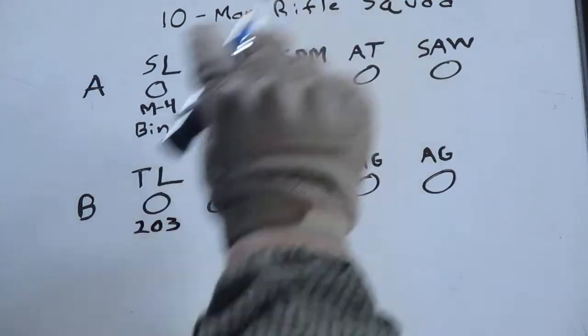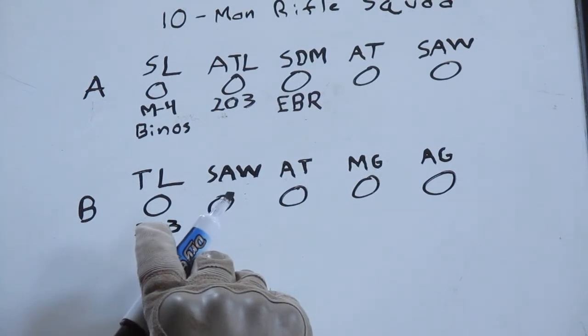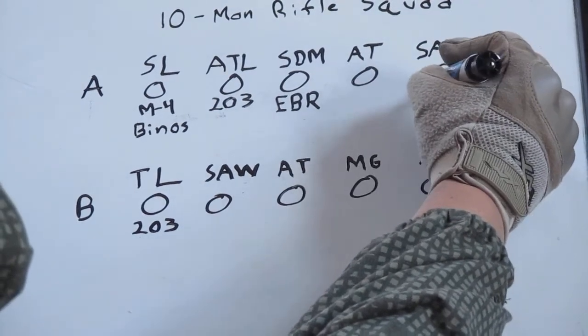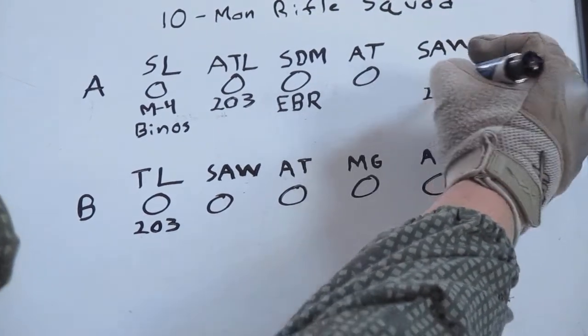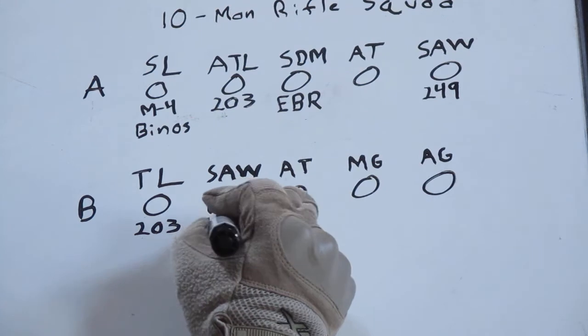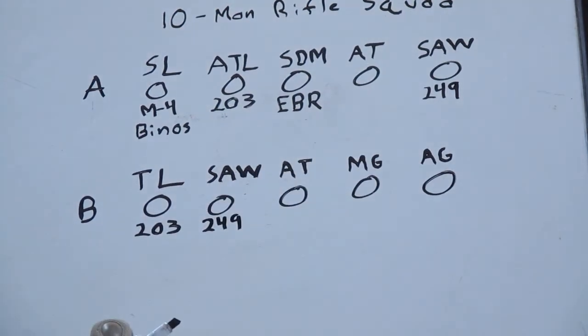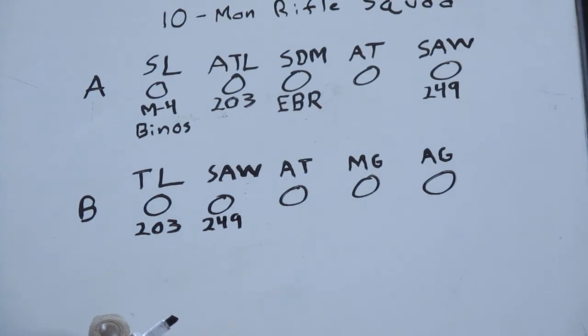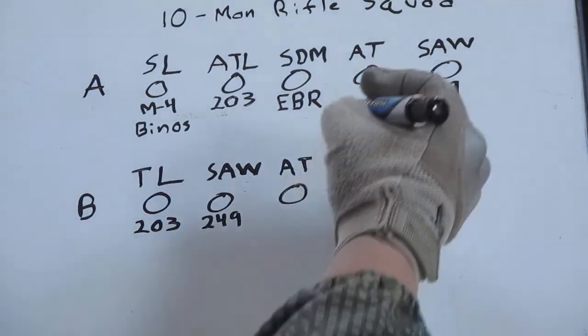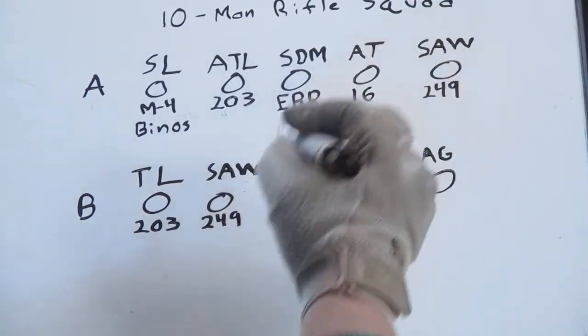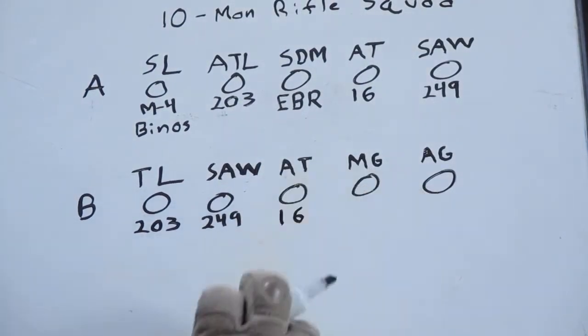Military use saw gunners or squad automatic rifle - they'll be issued 249 or its variant if it's a NATO military. If it's Russian it'll be an RPK. Your anti-tank gunners should carry rifles or carbines. We'll give them right now M-16s or they would get AKs.